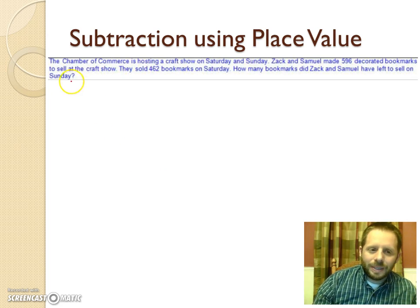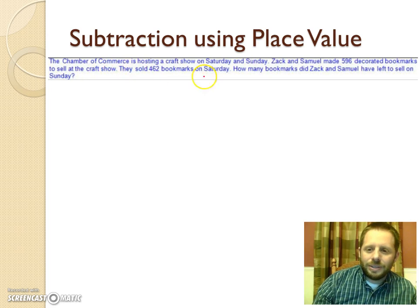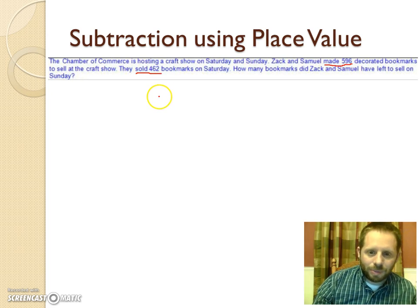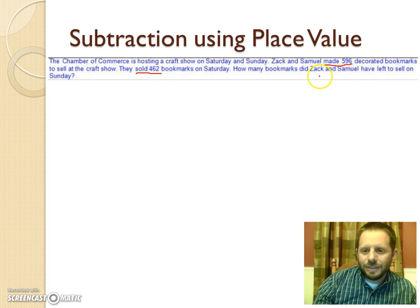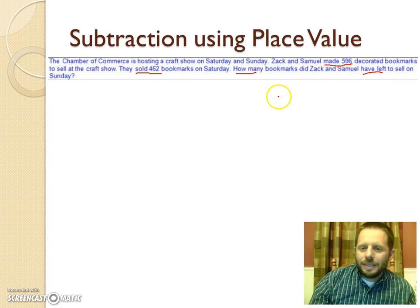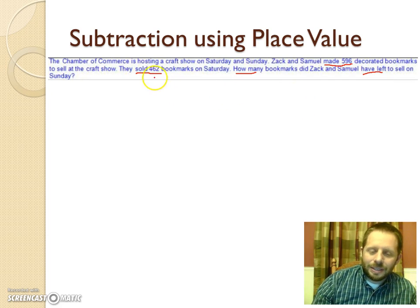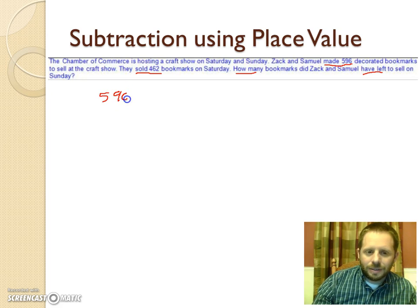The Chamber of Commerce is hosting a craft show on Saturday and Sunday. Zach and Samuel made 596 decorated bookmarks to sell. They sold 462 bookmarks on Saturday. How many bookmarks did they have left to sell on Sunday? That's a subtraction problem - we remove the ones sold on Saturday to find what's left. The original problem is 596 minus 462.